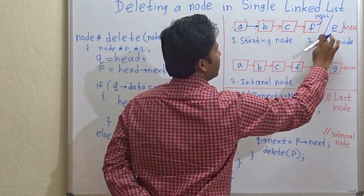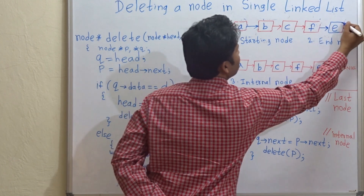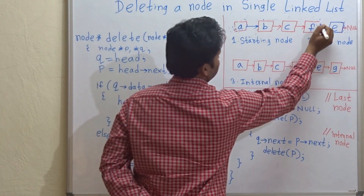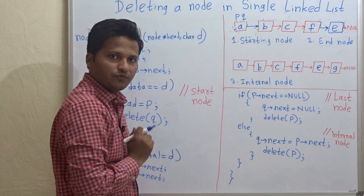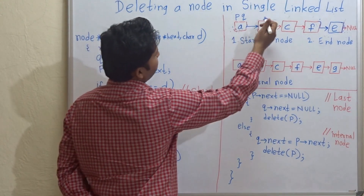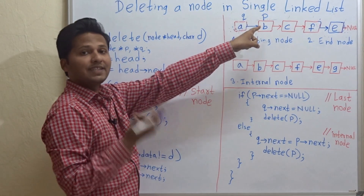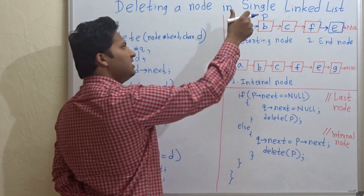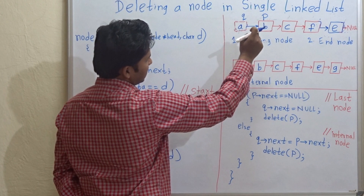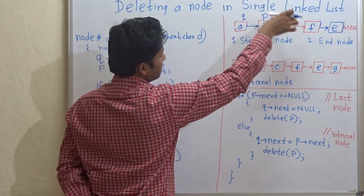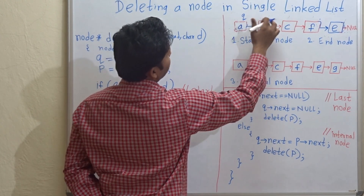Now let's see how to do this programmatically. P and Q will both point to the head of the node. Then take P to the next of Q. Q is pointing to the starting node and P is pointing to the second node. This is the initial condition for the program. Now, in a while loop, take both pointers ahead by one location — Q goes ahead by one location and P goes ahead by one location.